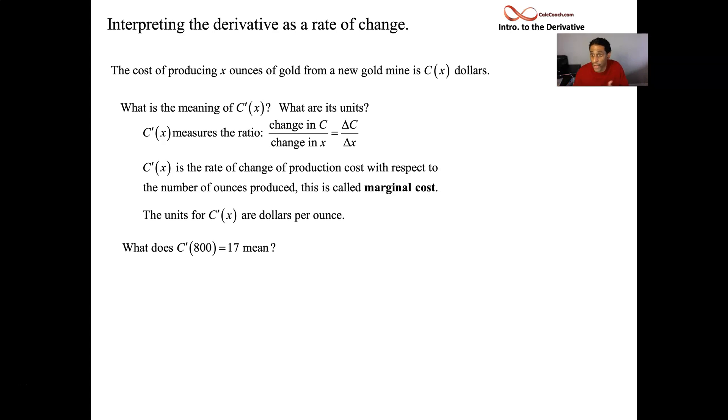But see, let's set it up as a fraction. This is meant to be a fraction. Let's put the 17 on top of one. The numerator is the change in cost, denominator is the change in input. You're at 800 right now. You're producing at a level of 800 ounces of gold. If it goes up to 801, if it changes by one, the cost should change by $17.